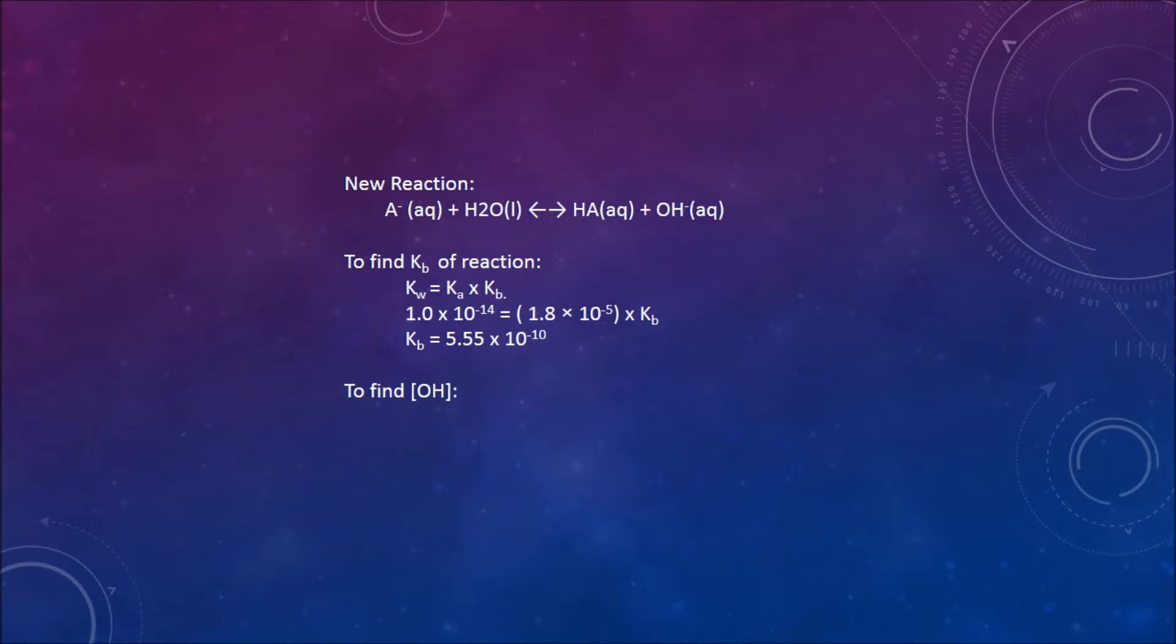Now you must find the concentration of OH. You have KB which equals OH- times the HA over the conjugate base. 5.5 times 10 to the negative 10 equals X squared, because you have equal concentrations of the OH and the HA, divided by 0.05 molar of the conjugate base acetate. You divide by 0.05 molars and you get 2.78 times 10 to the negative 11 is X squared. You have to find the square root of that. The square root of that would be 5.3 times 10 to the negative 6. So the concentration of hydroxide in the solution is 5.3 times 10 to the negative 6.